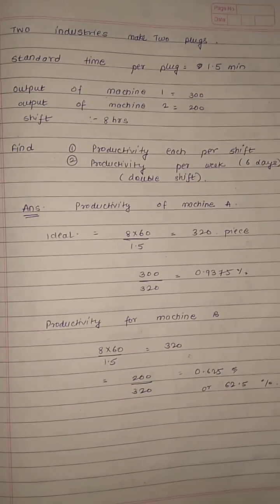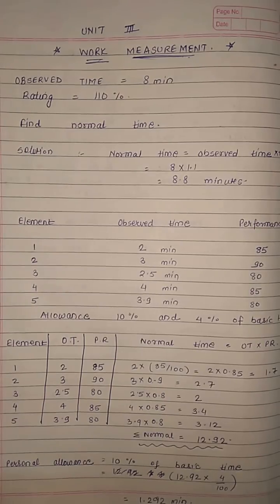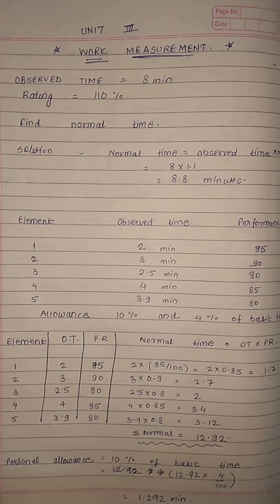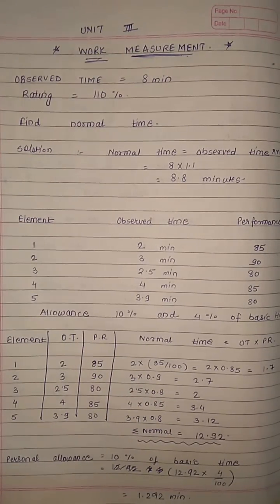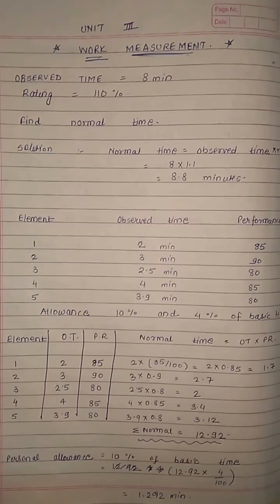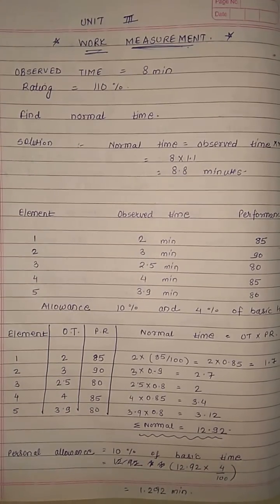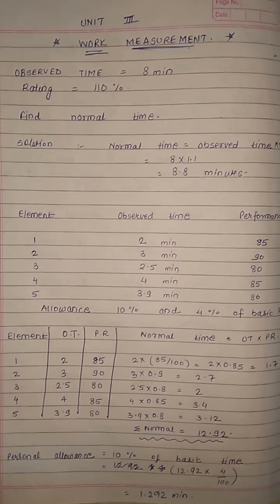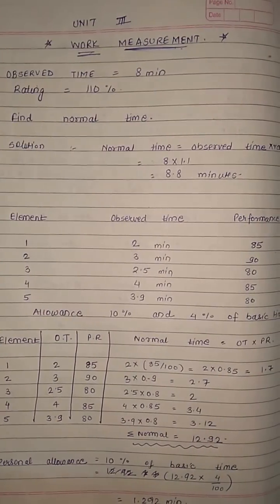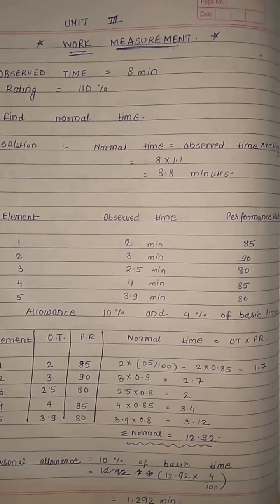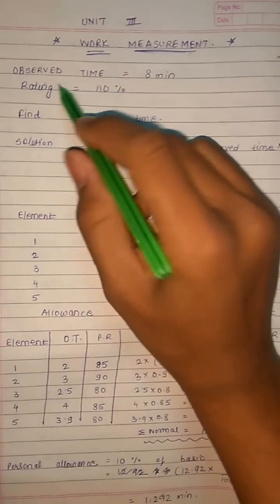Let's take a look at the next chapter, which is work measurement — unit number 3. The numericals are easy but vast with many varieties. They may be asked for 6 marks or 4 marks depending on the paper. Let's start with the first numerical.